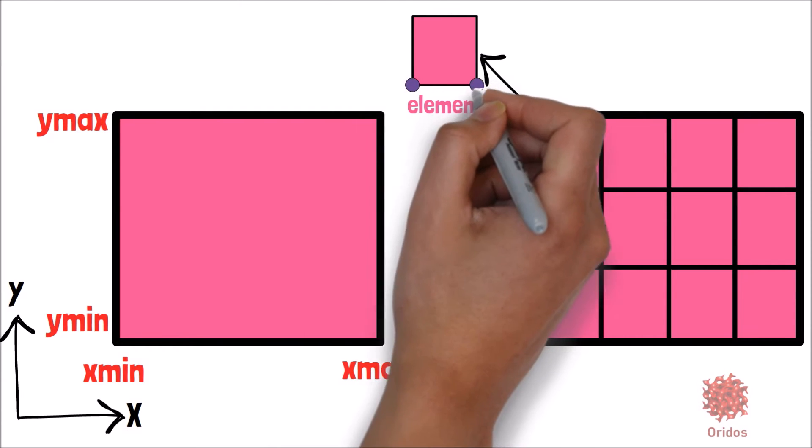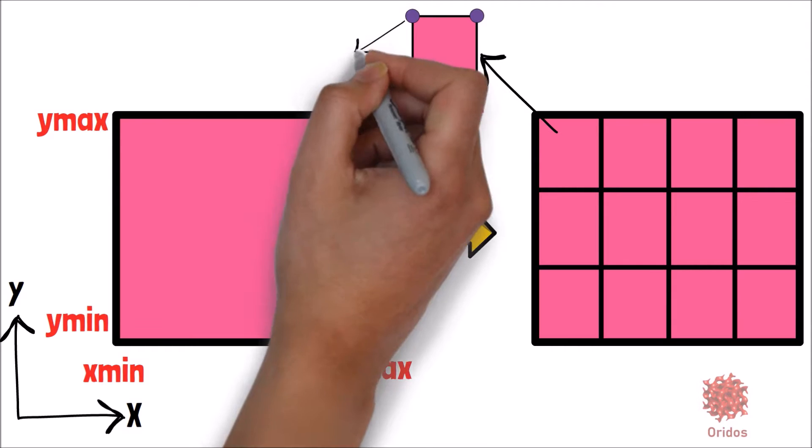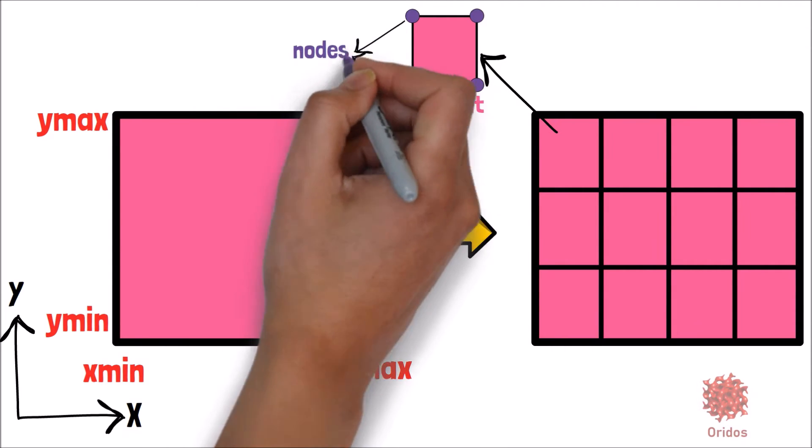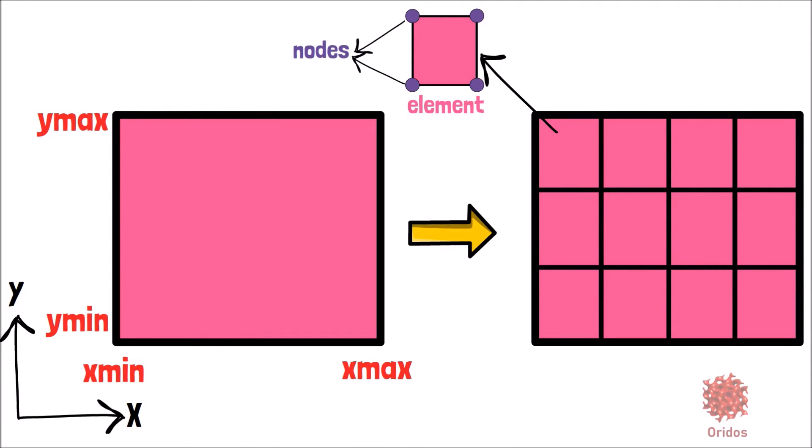These four points are called nodes or grid points. The four-node element is called quad four. As another implementation rule, let's do the numbering of the points from left to right and bottom to top. It's going to be like this.